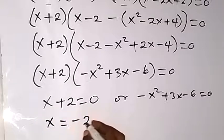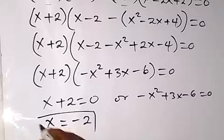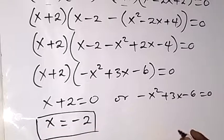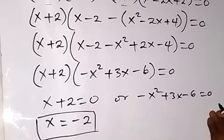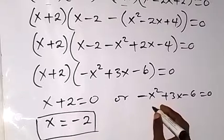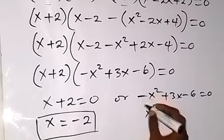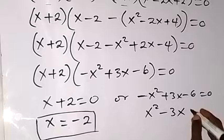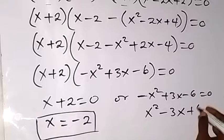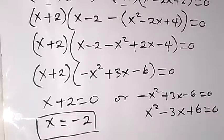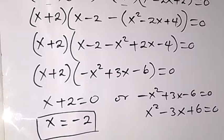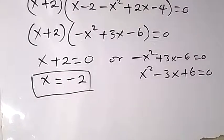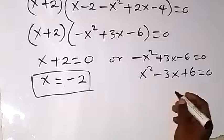The two expressions multiplied together equal 0, so either one of them will be 0. We have x plus 2 equals 0, or minus x squared plus 3x minus 6 equals 0. So here we have x equals to minus 2. Then we get the other solutions from the second factor. We can solve this by multiplying through by minus to remove this minus, so this becomes x squared minus 3x plus 6.